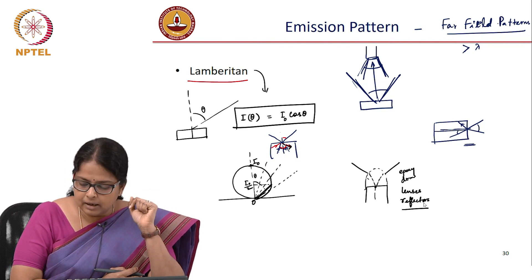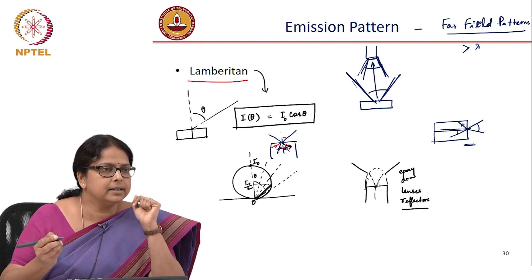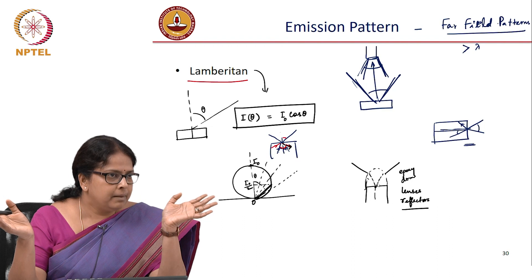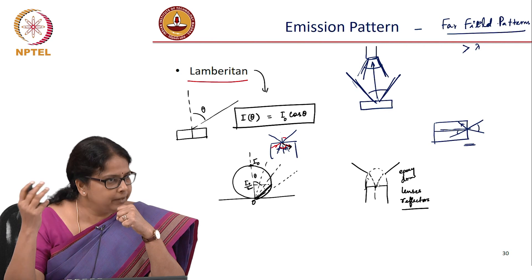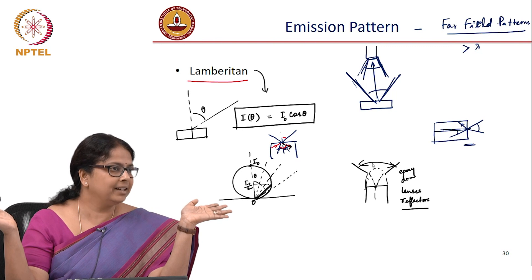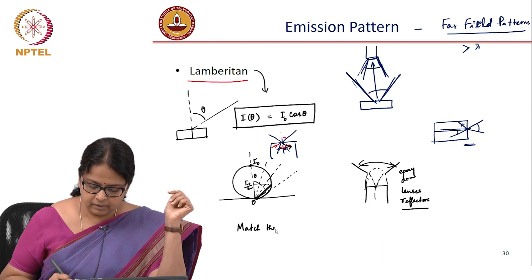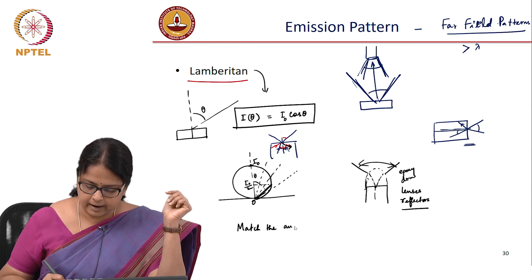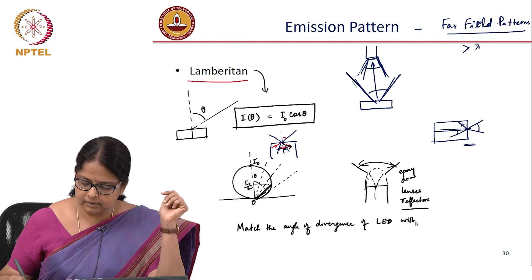By putting dome lenses, reflectors, etc., you can manipulate the emission angle. But as far as the LEDs for optical communication is concerned, what we are interested is not to increase the emission angle arbitrarily large, we want to match the angle of divergence of LED with the numerical aperture of the fiber.